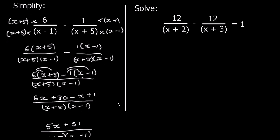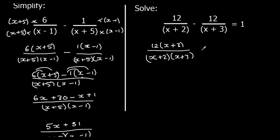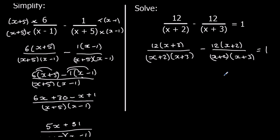This second one says solve. The first step's the same, then we'll deal with the solving after. So we're going to add the fractions first — times this one by x plus 3 and this one by x plus 2. So we have 12 times x plus 3 over x plus 2 times x plus 3, take away 12 times x plus 2 over the same denominator, equals 1. Now we've got the same denominators, so we make it one fraction over x plus 2 times x plus 3.